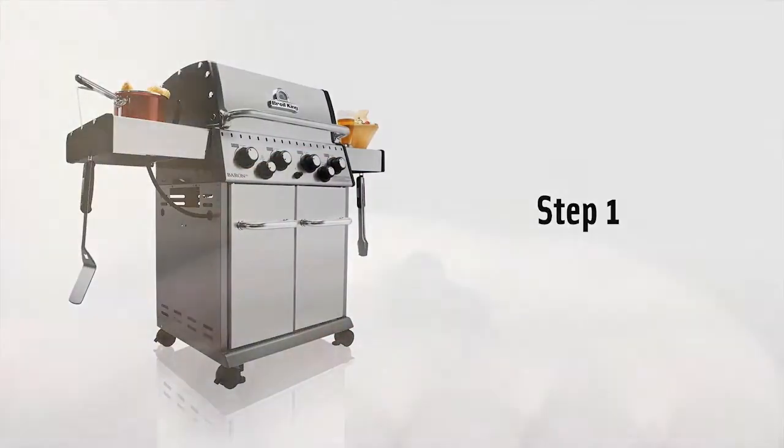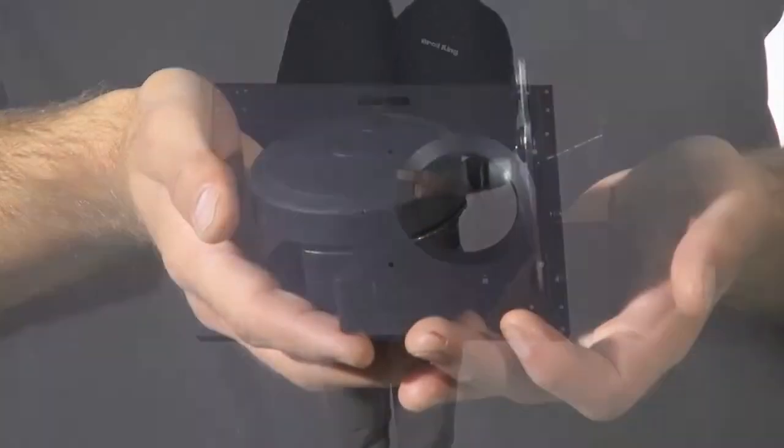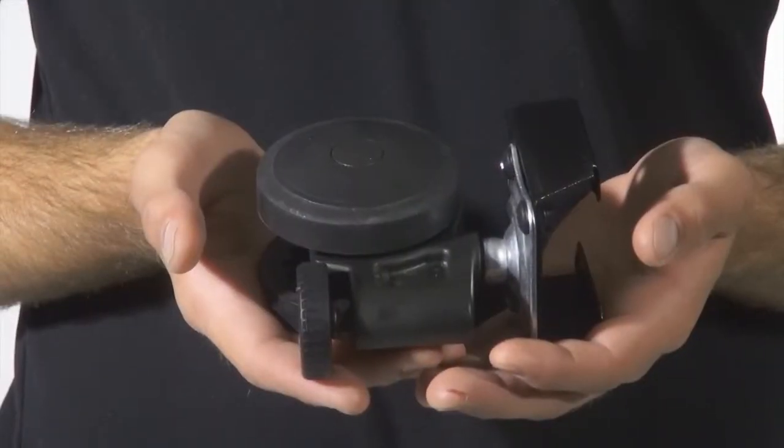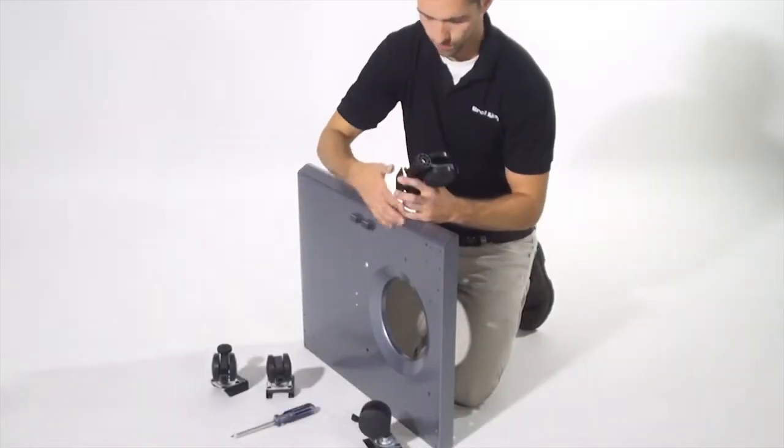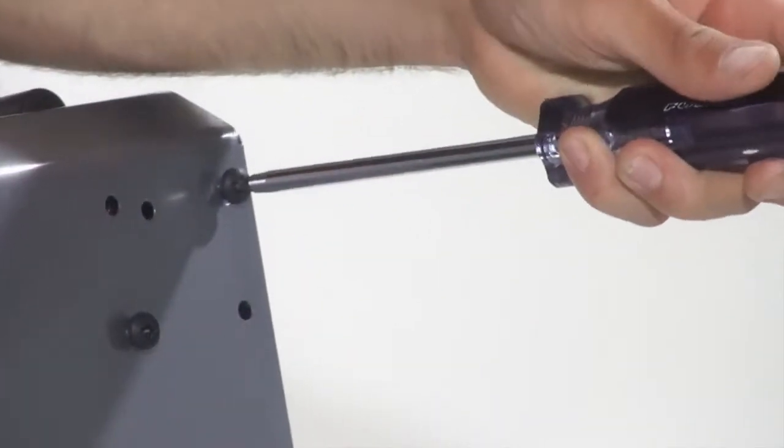Step one. Using the eight short screws, fasten the caster brackets to the base. Ensure the two casters with leveling feet are mounted on the front of the base. Now tighten using your screwdriver.